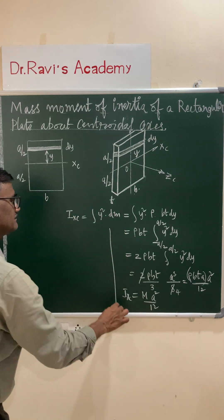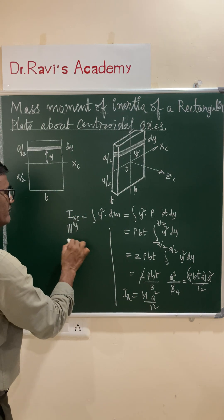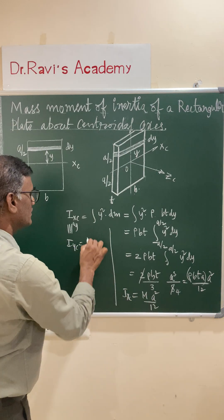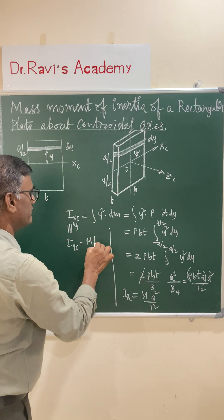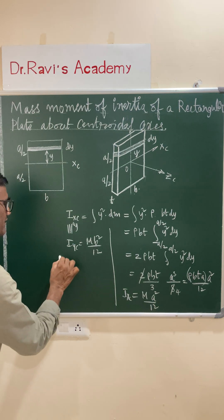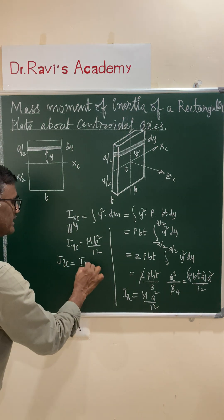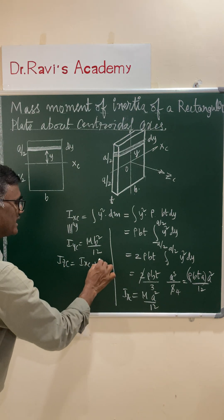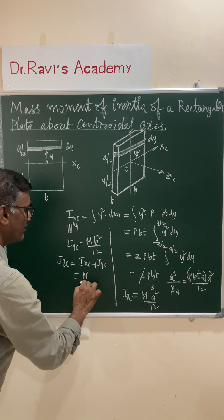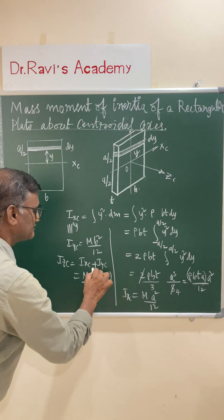Similarly, by symmetry, Iyc = m·b²/12. Applying the perpendicular axis theorem, Izc = Ixc + Iyc = m/12 · (a² + b²).